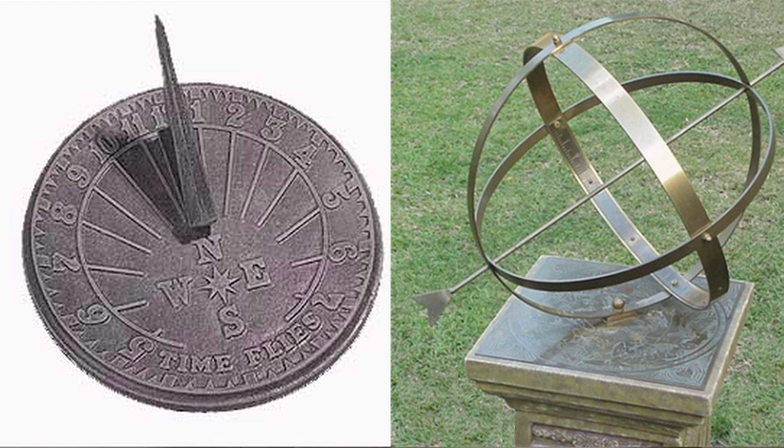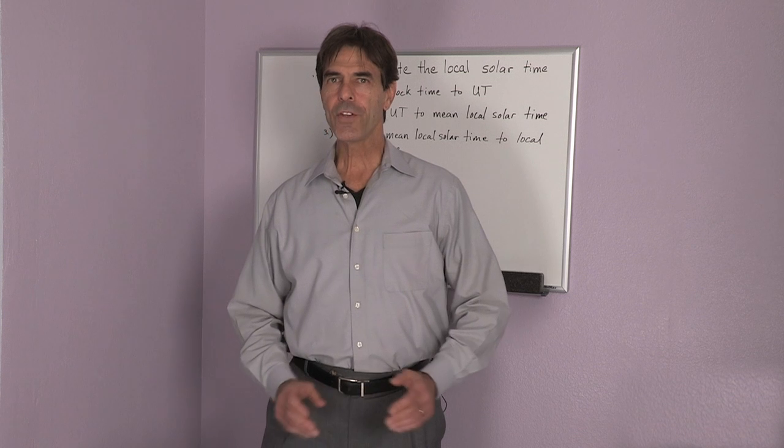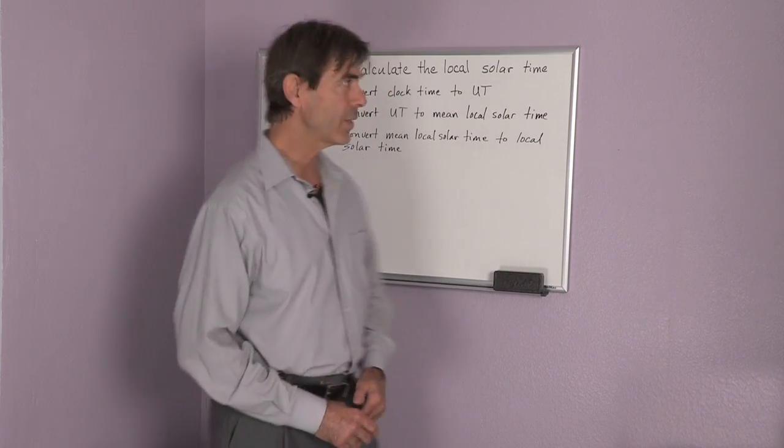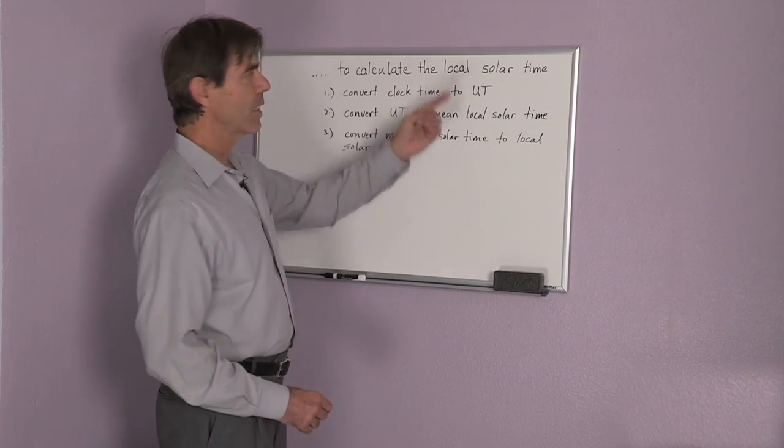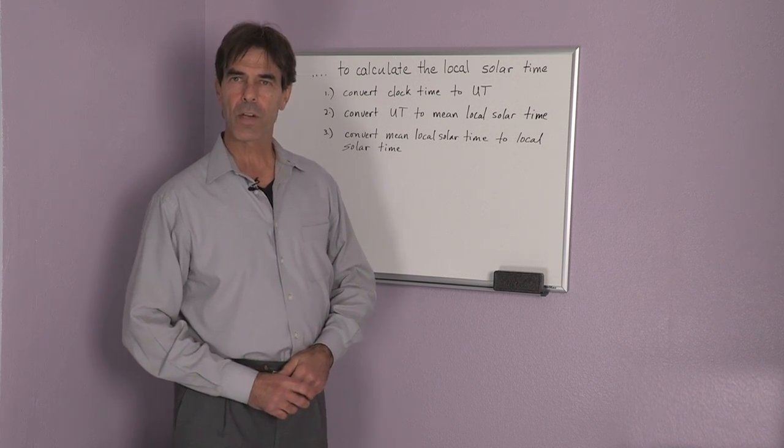And if the sundial tells you it's 10:30 in the morning, then you multiply 1.5 hours by 15 degrees. If you don't happen to have a sundial, then you will have to convert the clock time to the local solar time.